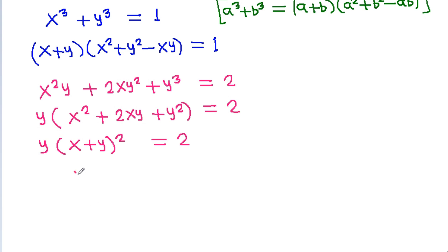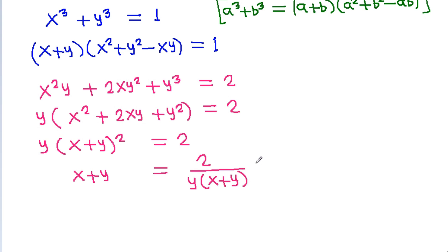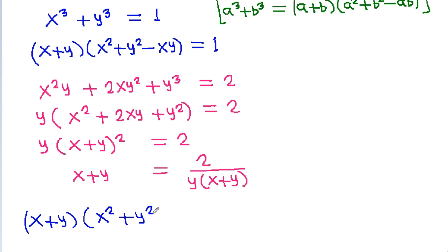From the second equation, x squared plus y squared equals 2 divided by y times (x plus y). Substituting into the first equation: (x plus y)(x squared plus y squared minus xy) equals 1.